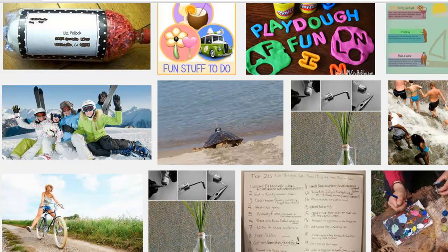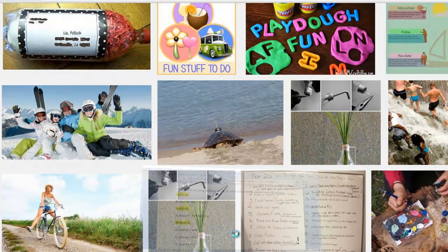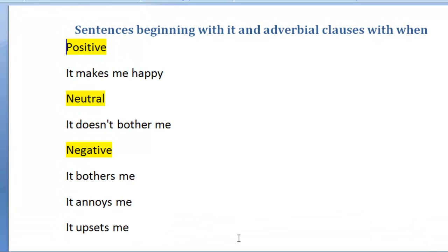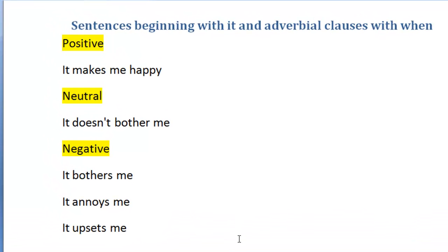And of course we'll learn how to express things that bother you, like 'It bothers me when...' — that's a quick example. So the first thing we should learn, similar to our previous class, is some key vocabulary. For positive sentences, use expressions like 'it makes me happy.' For neutrality, use 'it doesn't bother me.' For negative statements, use 'it bothers me,' 'it annoys me,' or 'it upsets me.'